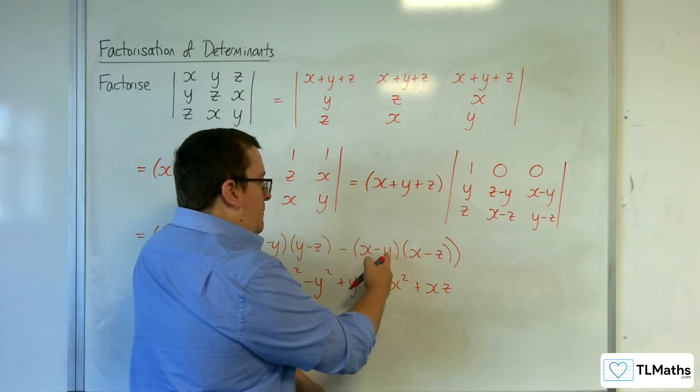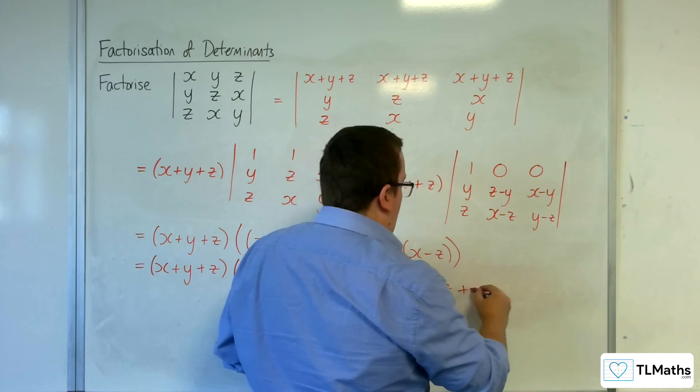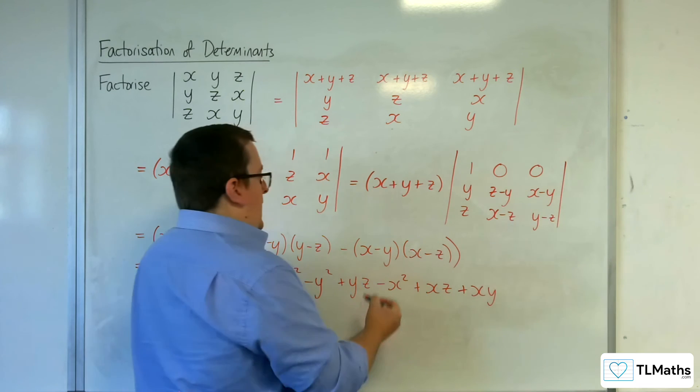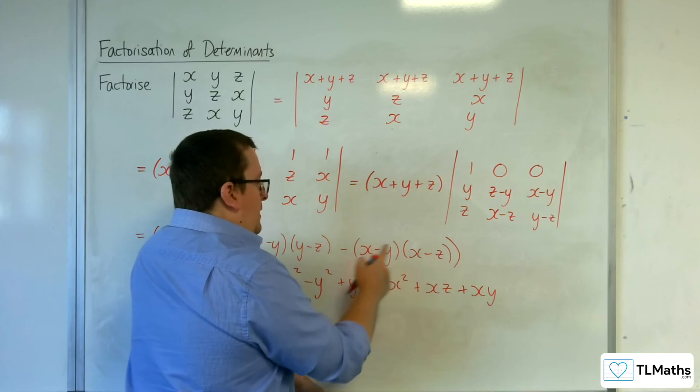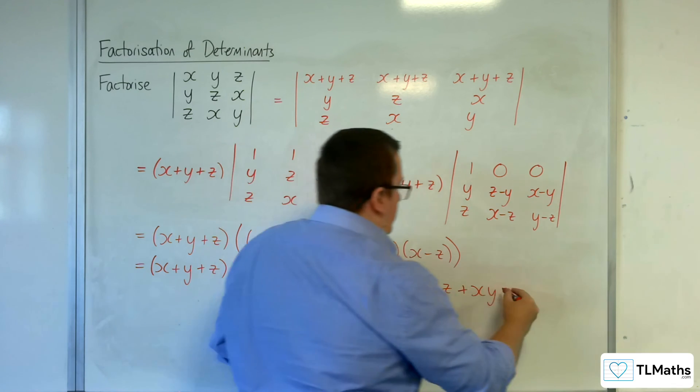Then I'm going to have minus y times x, but I've got minus outside, so plus xy. And then I've got minus y times minus z, so yz take away, so take away yz.